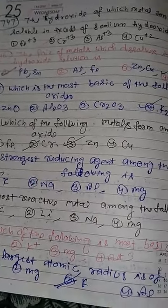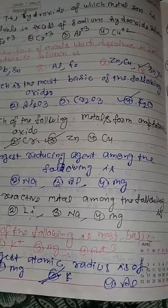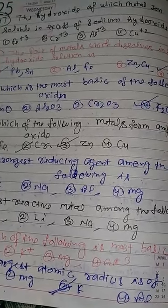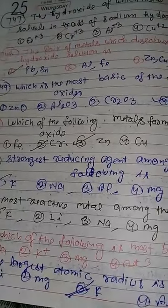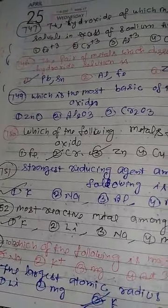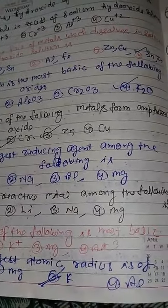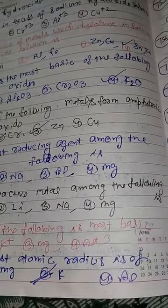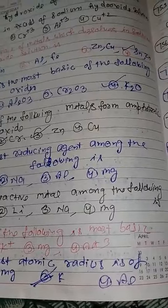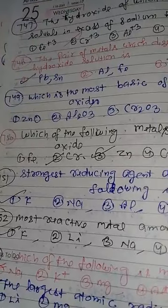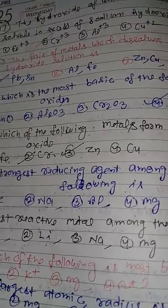Next: which of the following metals forms amphoteric oxides? Amphoteric oxides. Options: Fe, Cr, Zn, and Cu. The answer is Cr and Zn. Next question is strongest reducing agent among the following phases.